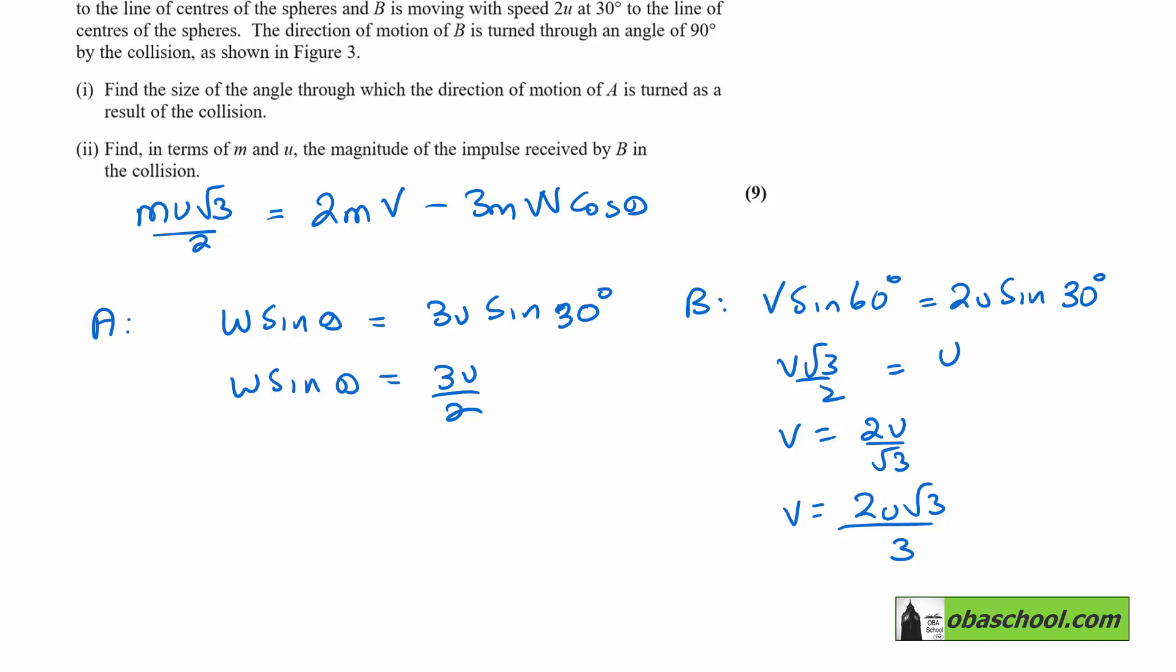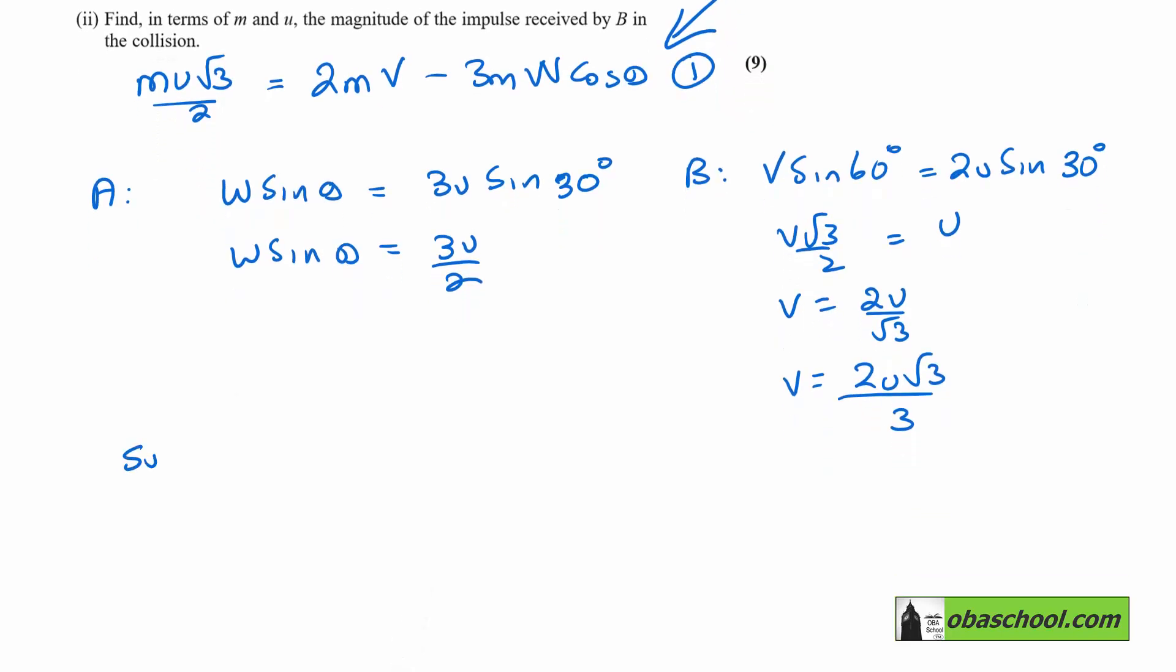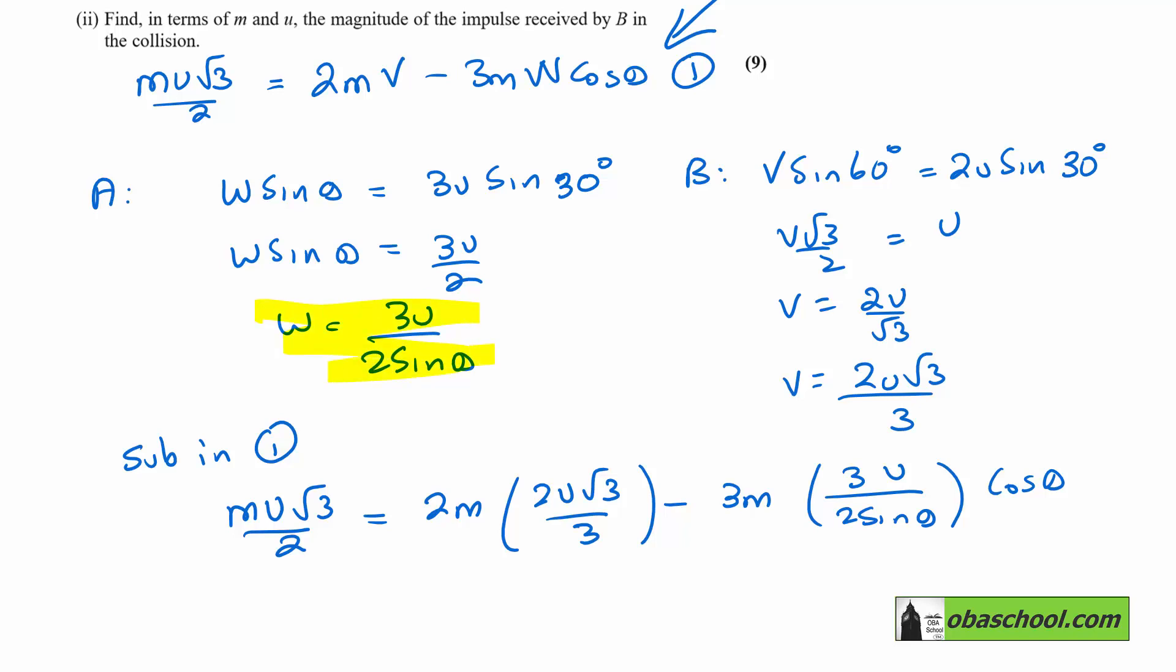And we can substitute those into this equation that we got before. So let's call that equation 1 and let's say sub those results into 1. So if we do that, we get MU root 3 on 2 is equal to 2M 2U root 3 on 3. Take away 3M 3U over 2 sin theta cos theta. That's using here that W is 3U over 2 sin theta. So we've substituted here and here into this equation just here.